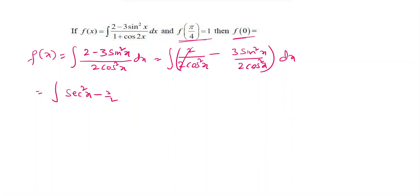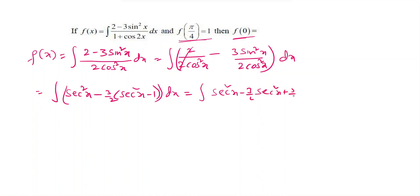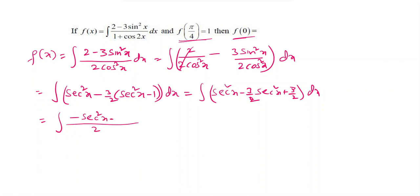The term sin²x by cos²x is tan²x, and tan²x equals sec²x minus 1. So this becomes integration of sec²x minus (3/2)(sec²x minus 1) dx. Taking LCM of 2, this simplifies to integration of (2sec²x minus 3sec²x) by 2, which is minus sec²x plus 3, all over 2.